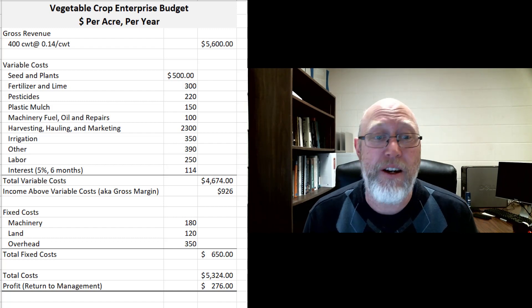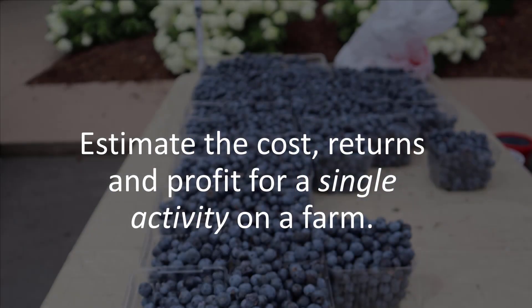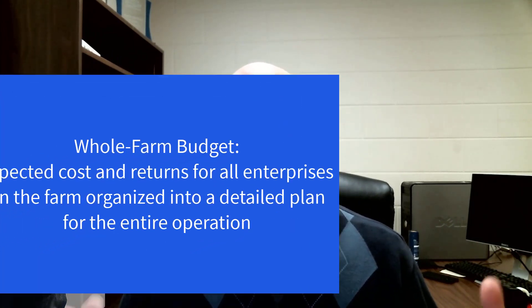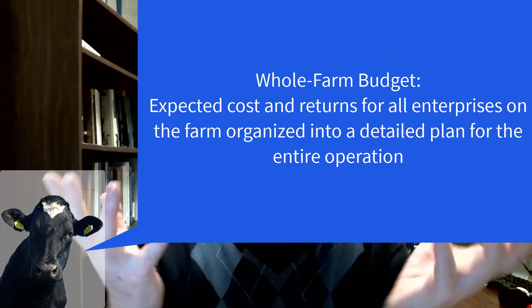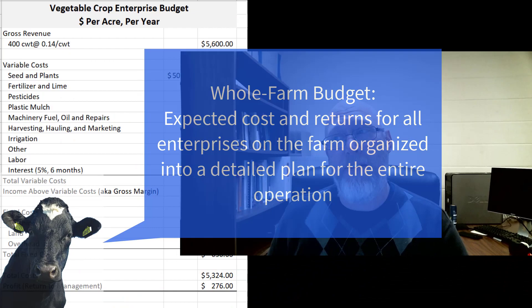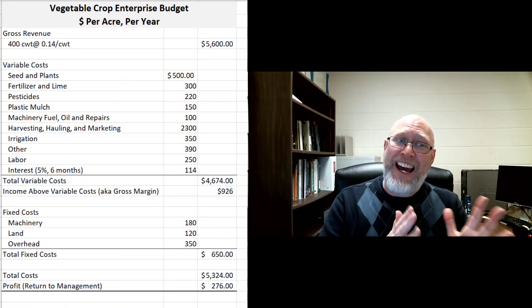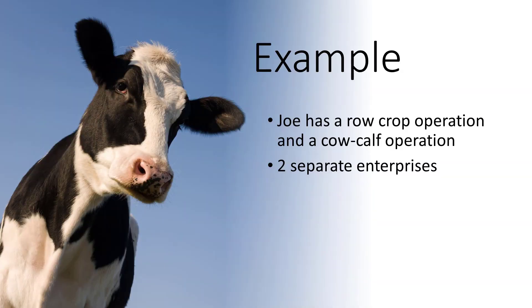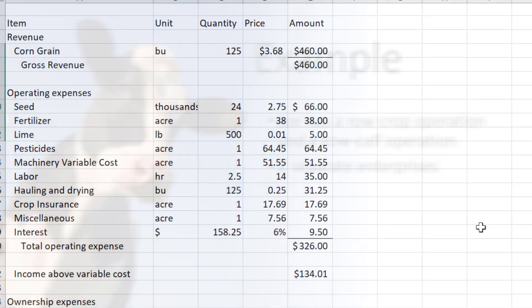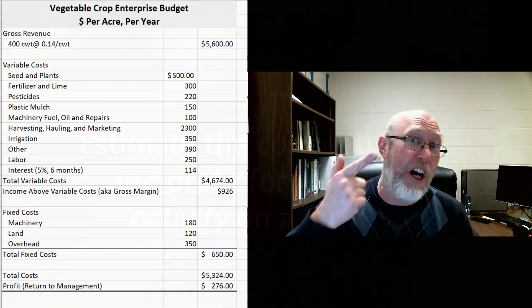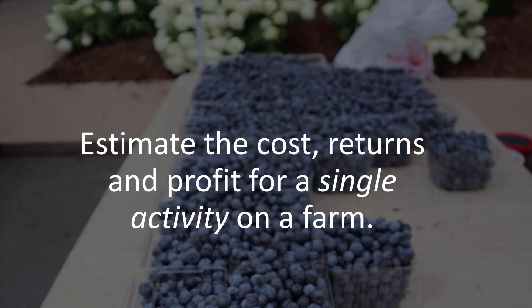An enterprise budget is an estimate of the cost, returns, and profit for a single activity on a farm. We typically have multiple types of budgets. You might have a whole farm budget, which is the budget for the entire farm operation — oftentimes the farm operation and the farm household. Then you devise a budget for each individual activity on a farm, like a vegetable crop, a livestock item, or a row crop. The enterprise budget is a budget for a single activity on that farm.